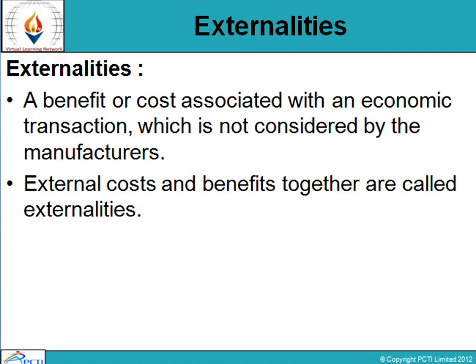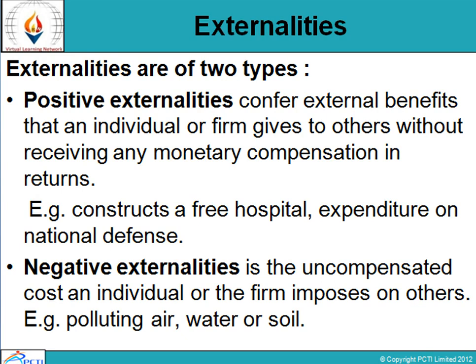External costs and benefits together are called externalities. Alternatively, the term externalities refers to benefits or costs associated with an economic transaction that are not taken into account by those directly involved in making it. Externalities are also called spillover effects or neighborhood effects. We have two types: positive externalities and negative externalities.